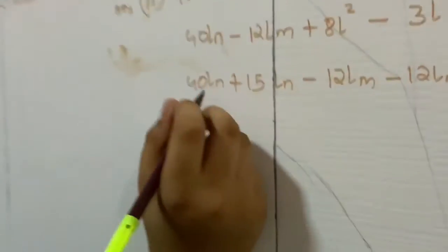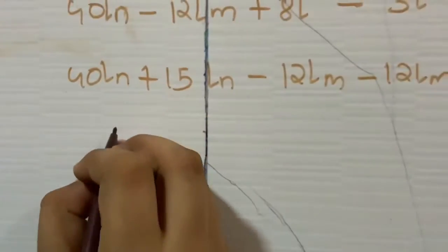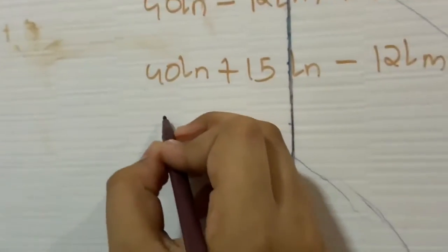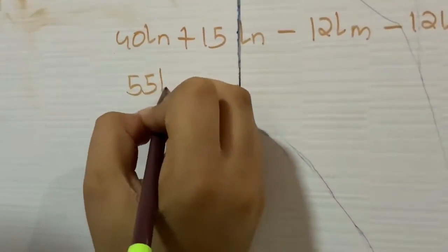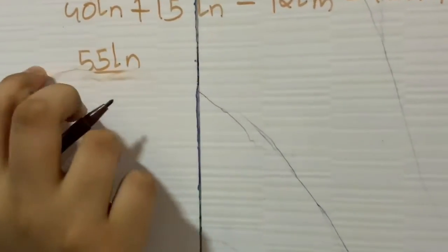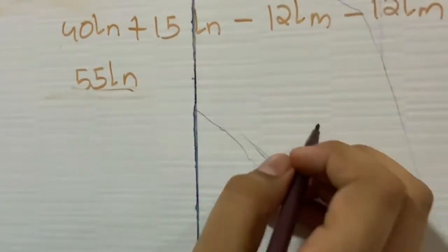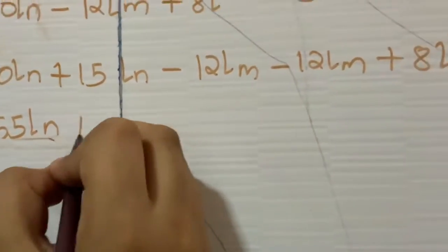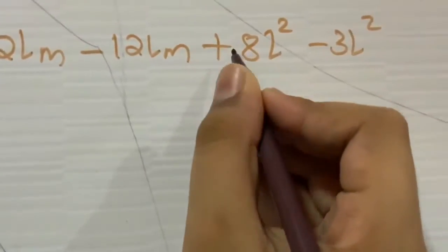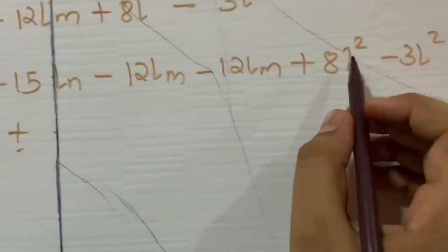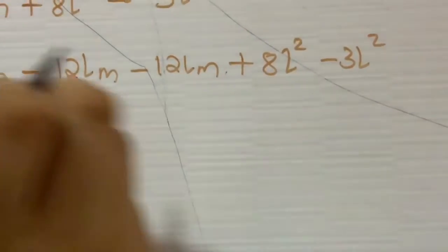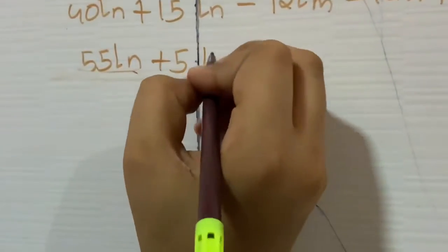So now we need to add this. So we will get 55LN. And here when we will subtract them we will get the answer 0. So we do not need to write that. And here the greater sign is of plus. So I took here plus. And plus minus is minus. So when we subtract it we will get 5L square. So this was our answer.